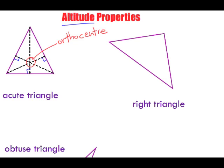This works with all acute triangles — triangles where all angles are less than 90 degrees. So this angle, this angle, and this angle are all less than 90 degrees, which is what makes it an acute triangle.